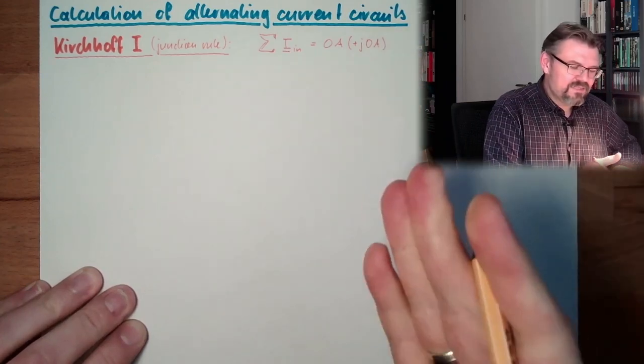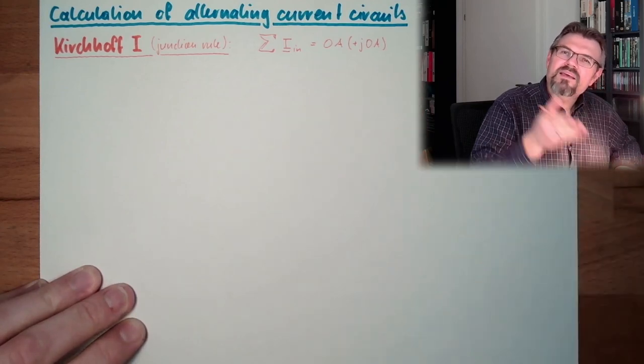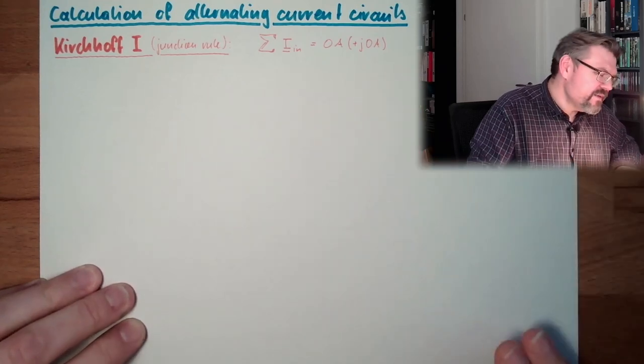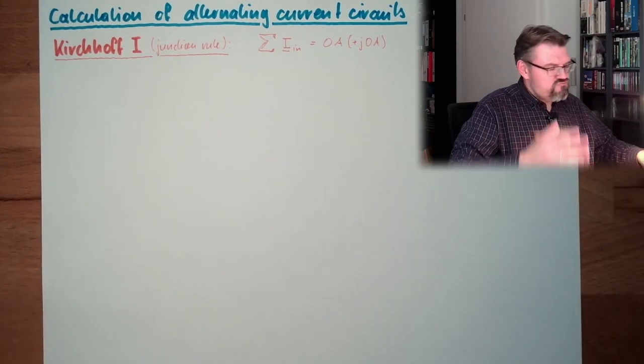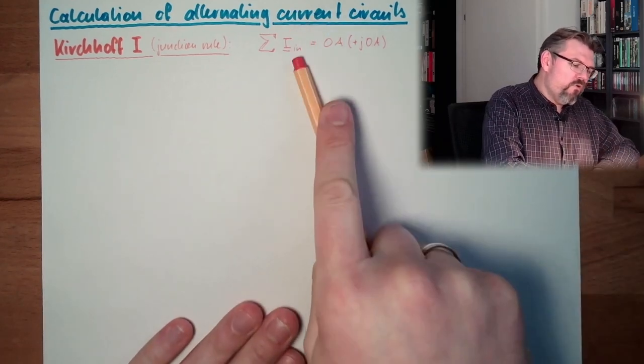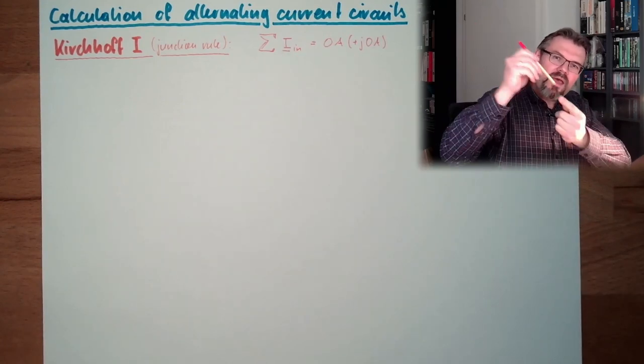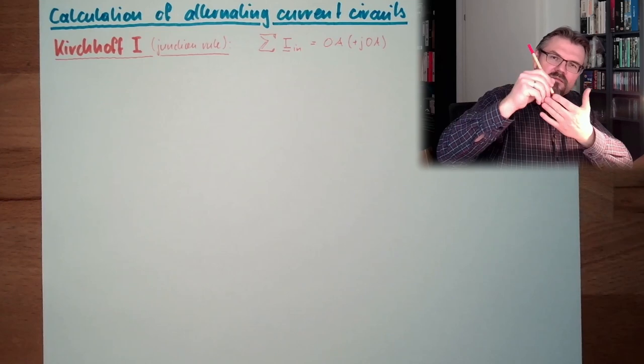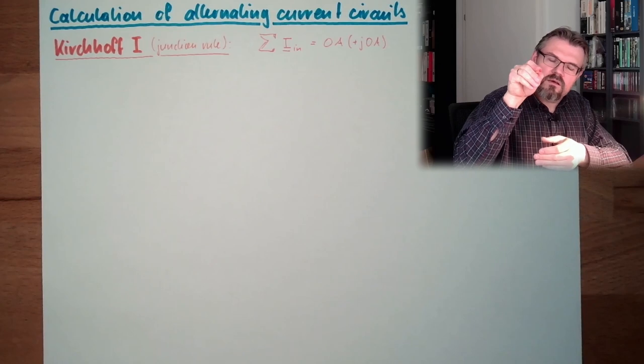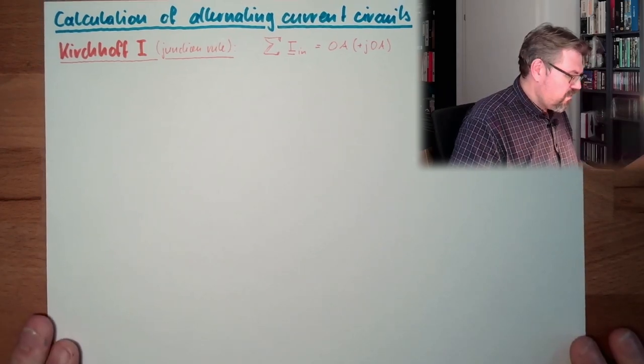Now I have to write this plus J zero amps. But this is not even necessary because zero is zero. You don't have to write this plus J zero, I'm writing it just to have it covered. So all currents must sum up and the final pointer, the sum of all pointers must be in the zero point of our complex area.